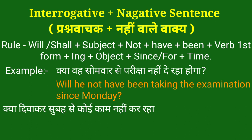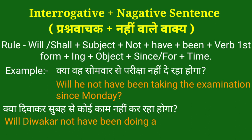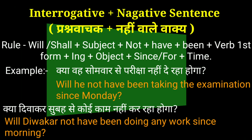Second example: क्या दिवाकर सुबह से कोई काम नहीं कर रहा होगा? — Will he not have been doing any work since morning? इस वाक्य में 'will have been' helping verb है, 'दिवाकर' subject है, 'not' नहीं के लिए प्रयोग किया गया है, 'doing' verb की first form + ing है, 'since' का प्रयोग किया गया है, और बाकी object है।